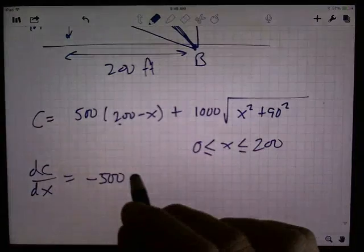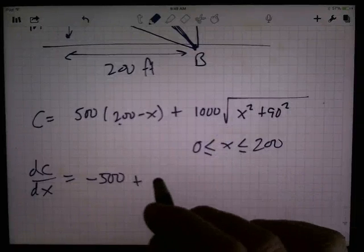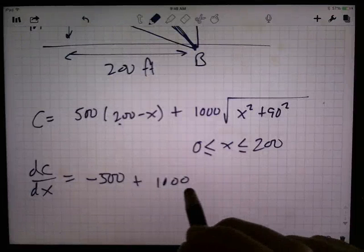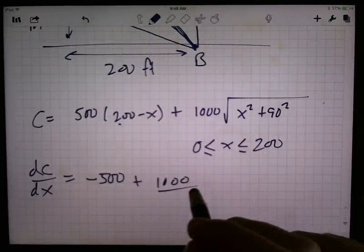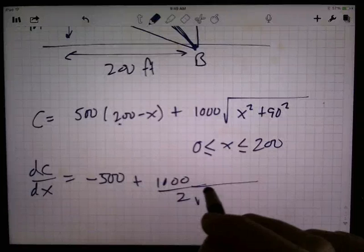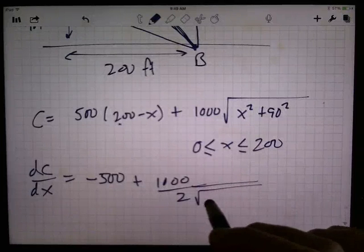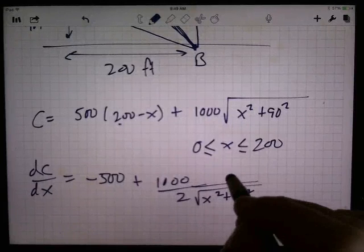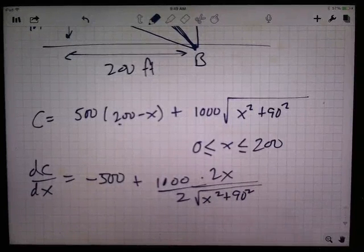a thousand times the derivative of this thing, which is going to be a half times that square root to the bottom, because you're going to have it to the negative half, right? Times the derivative of the inside, which is 2X.